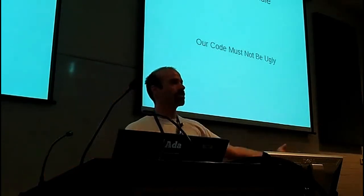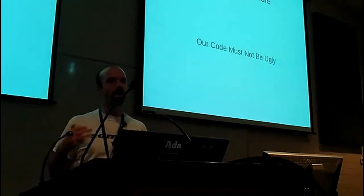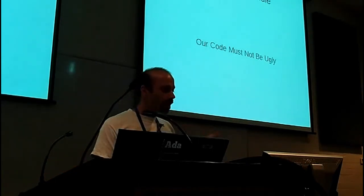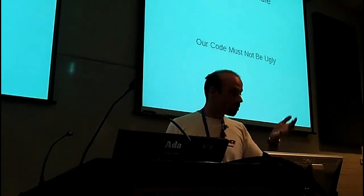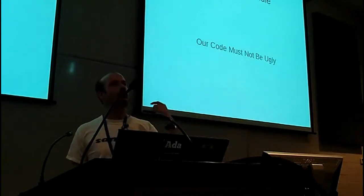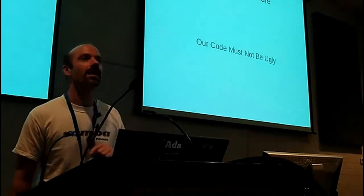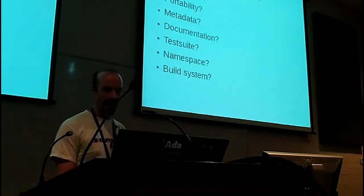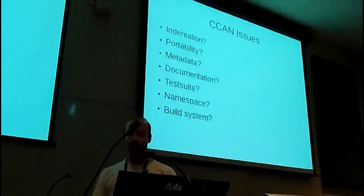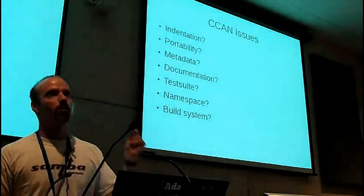This is the core rule upon which we base everything else, because we're dealing with this trust issue. People are not in the culture of just grabbing something from CCAN — at least not yet. So they're going to look at it and think to themselves: is this going to hurt me more than it's going to help me? When they look at the code, they have to go, 'yep, that seems sane and reasonable, I will take it.' So our code must not be ugly, because if it's ugly, it will scare people off.